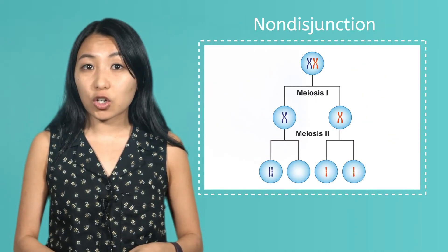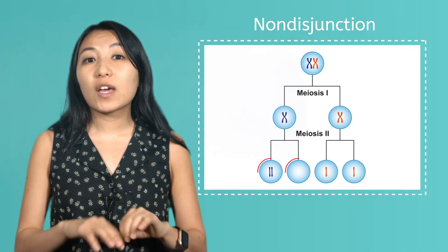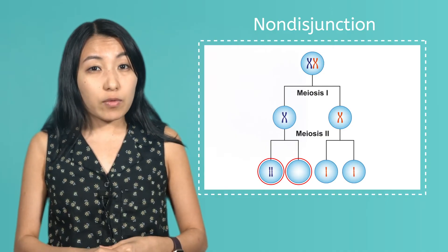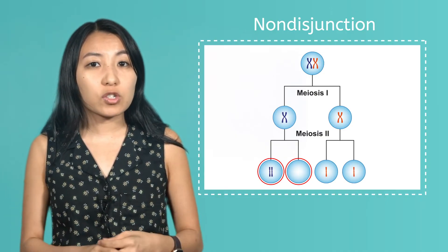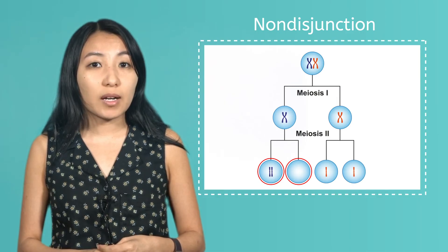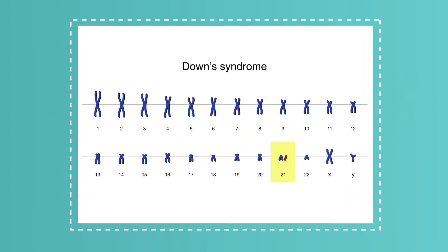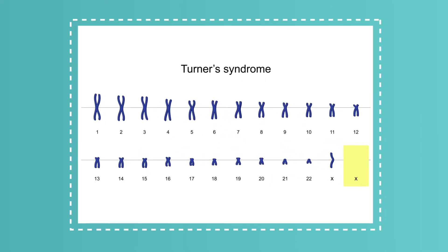Additionally, non-disjunction can occur, which is when chromosomes fail to separate properly during meiosis. When this occurs, the result is an abnormal amount of chromosomes when haploid cells combine. This can be diagnosed using a karyotype, which is a map of the number and appearance of all of the different chromosomes in an organism. For example, Down syndrome is the result of an extra chromosome in the 21st pairing, while Turner's syndrome is the result of a missing X chromosome in the 23rd pairing.